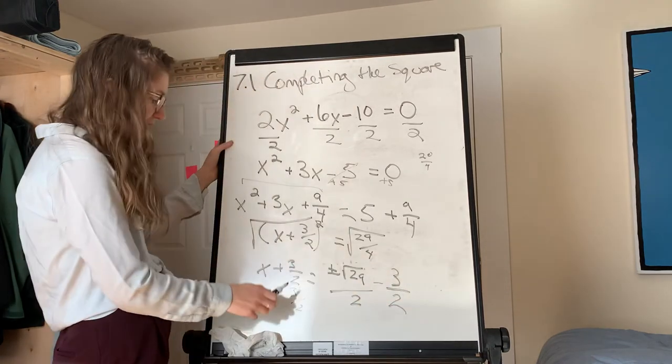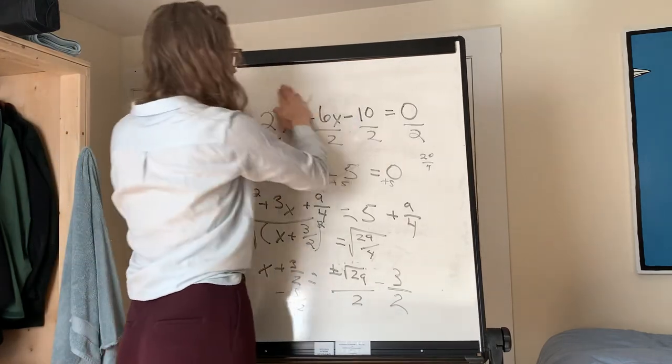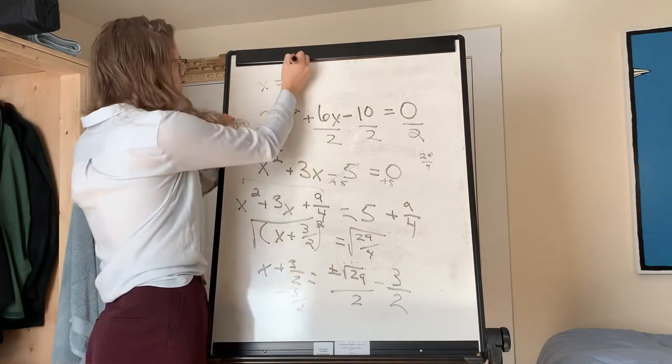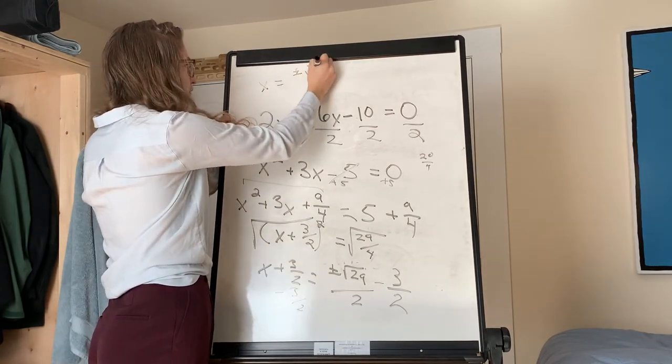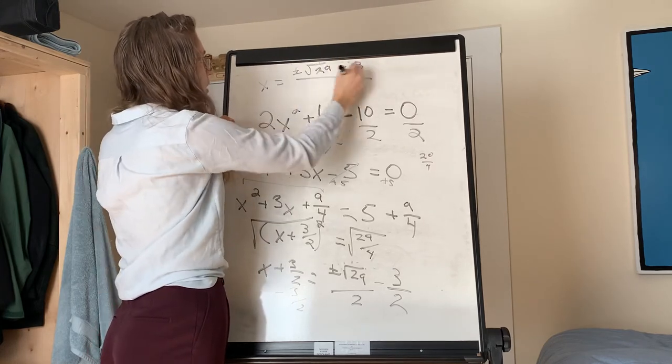So now we have x. I'm going to rewrite this at the top. Now we have x is equal to plus or minus the square root of 29 minus 3 all over 2.